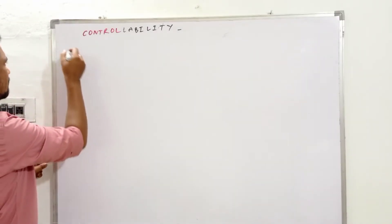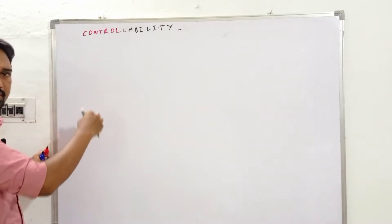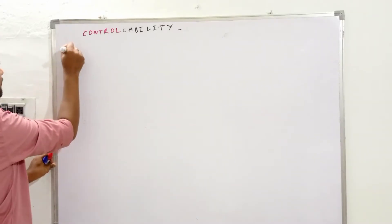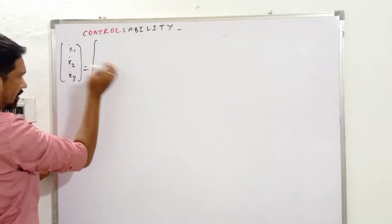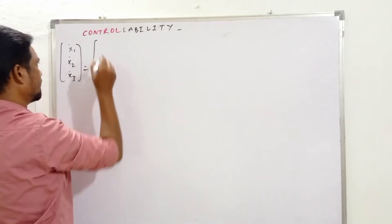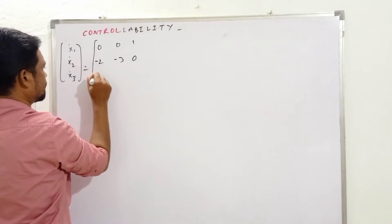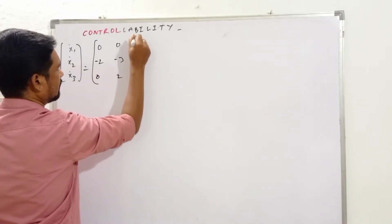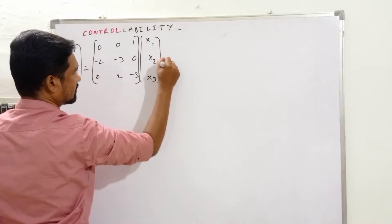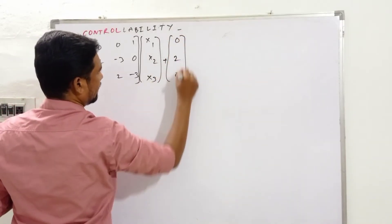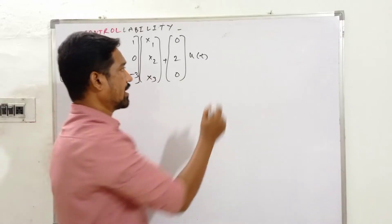Let me start from this point. We have x1-dot, x2-dot, x3-dot equal to the matrix with elements: row 1 is [0, 0, 1], row 2 is [minus 2, minus 3, 0], row 3 is [0, 2, minus 3], multiplied by [x1, x2, x3], plus B matrix [0, 2, 0]. So we identify the A matrix and B matrix from this state space form.